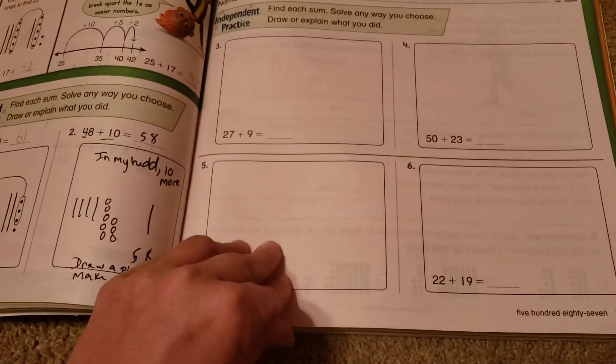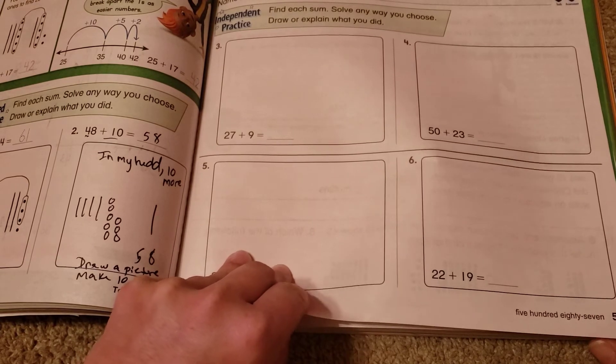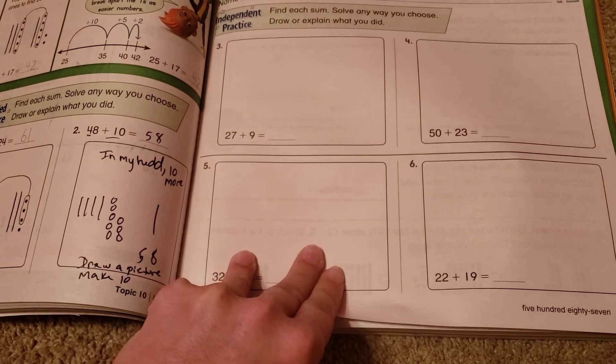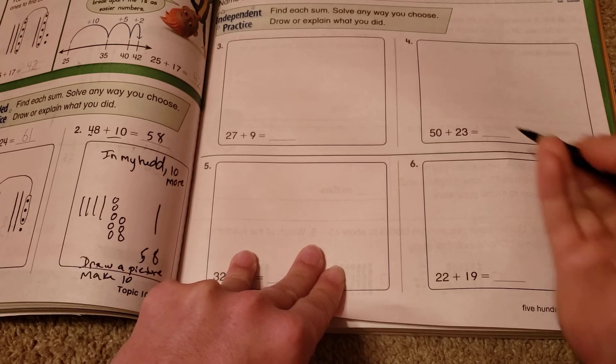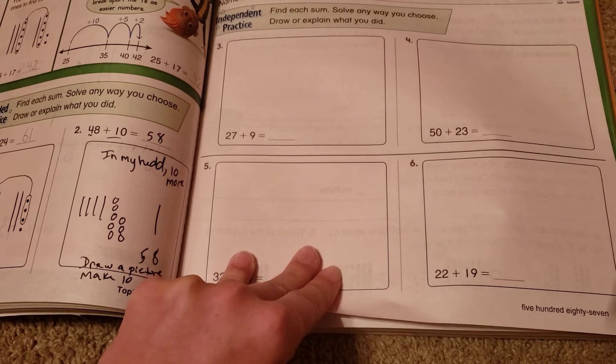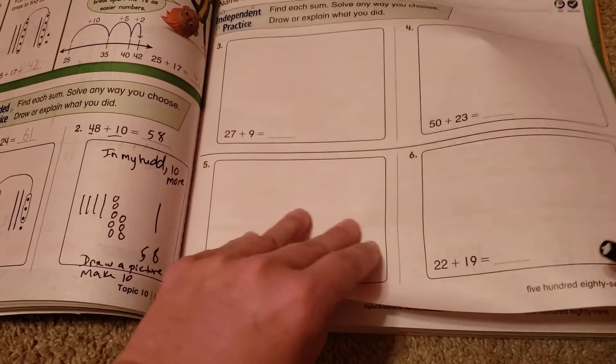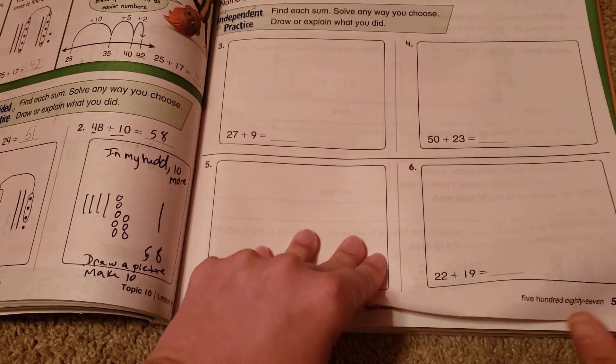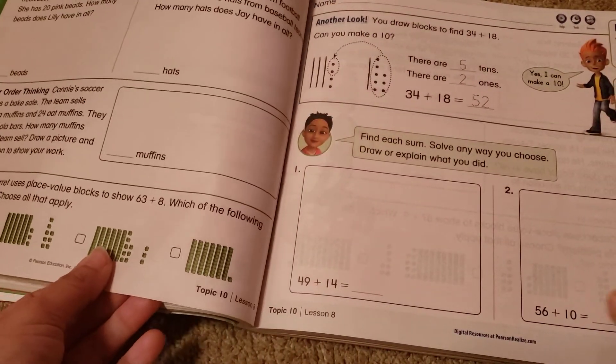So for page 587, you're going to do the same thing. You're going to solve them any way you choose. And then they ask you to just explain what you did. So if you draw a picture, that explains it. I know you drew a picture. You don't need to draw a picture and then write drew a picture. You can just show your picture or if you do an open number line. So when it says to draw or explain, you can just use your picture that you draw and show how you did it.